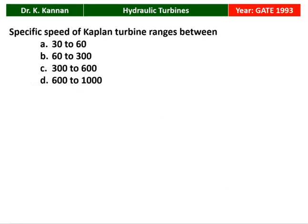The next question from the 1993 question paper: The specific speed of Kaplan turbine — it ranges from: 30 to 60; 60 to 300; 300 to 600; or 600 to 1000. At low specific speed, we prefer Pelton turbine. At medium specific speed, we prefer Francis turbine. At high specific speed, in the range of 300 to 600, we prefer Kaplan turbine. So Kaplan turbine has a specific speed between 300 and 600.